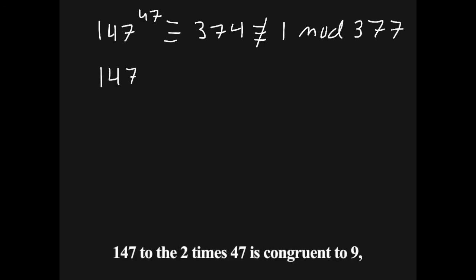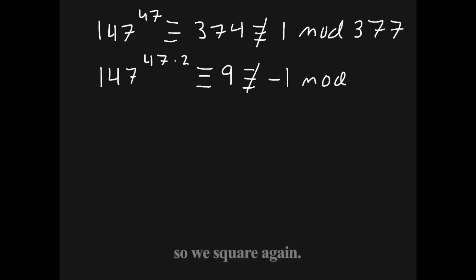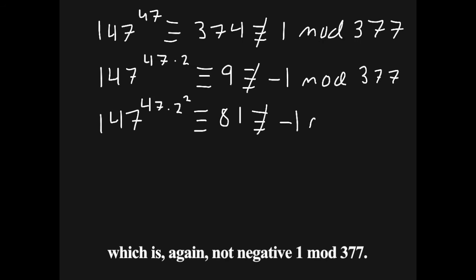147 to the 47 is congruent to 374, which is not 1 mod 377. So we continue. 147 to the 2 times 47 is congruent to 9, which is not negative 1 mod 377, so we square again. 147 to the 47 times 2 squared is congruent to 81, which is again not negative 1 mod 377.